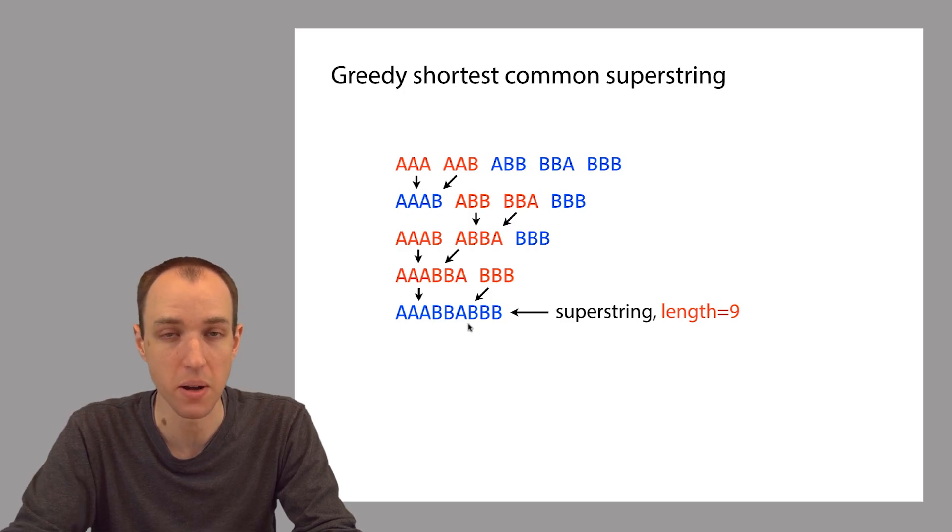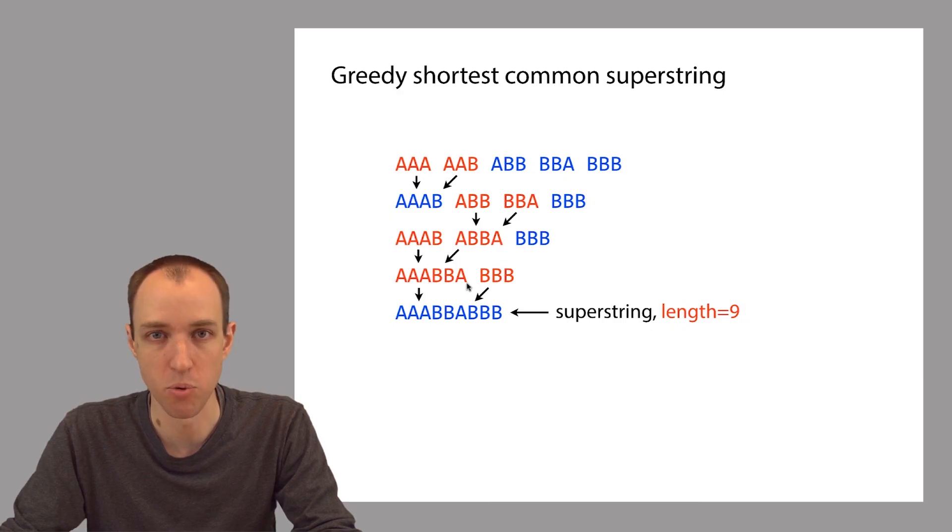As a result, we actually ended up with a different superstring. In fact, in this case, if you look at this line here, here are two strings that have no overlap with each other. There's no suffix prefix match between these two strings. This was a case where if we'd drawn out the graph, we would have seen that the graph had two nodes left and zero edges left at the end of the repeated merging of nodes. So we concatenated them together to get the final superstring.